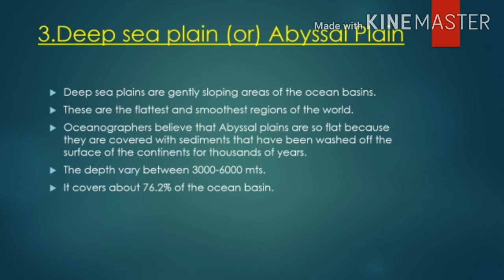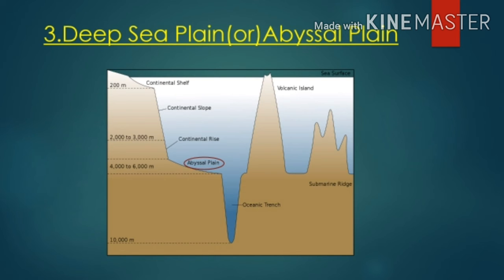The third part is the deep sea plains, also called abyssal plains. These are gently sloping areas of the ocean basins and are the flattest and smoothest regions of the world. Oceanographers believe abyssal plains are so flat because they are covered with sediments washed off the surface of continents over thousands of years. The depth of deep sea plains varies between 3,000 to 6,000 meters, and they cover about 76.2 percent of the total ocean area.